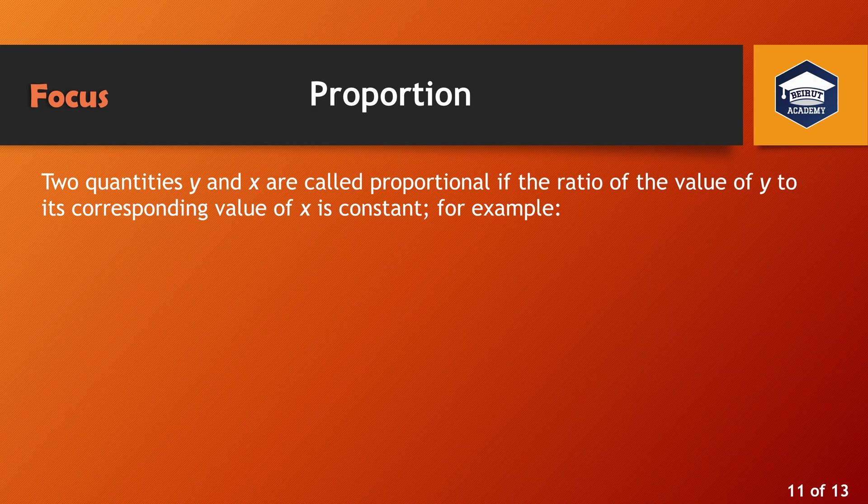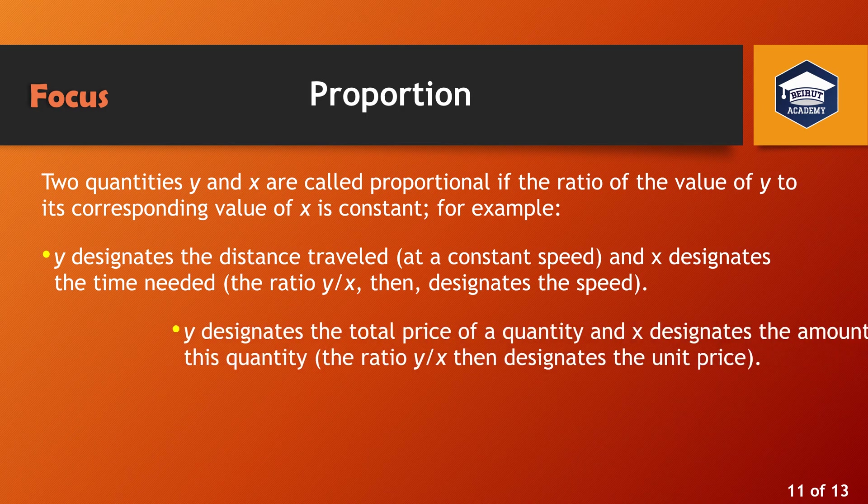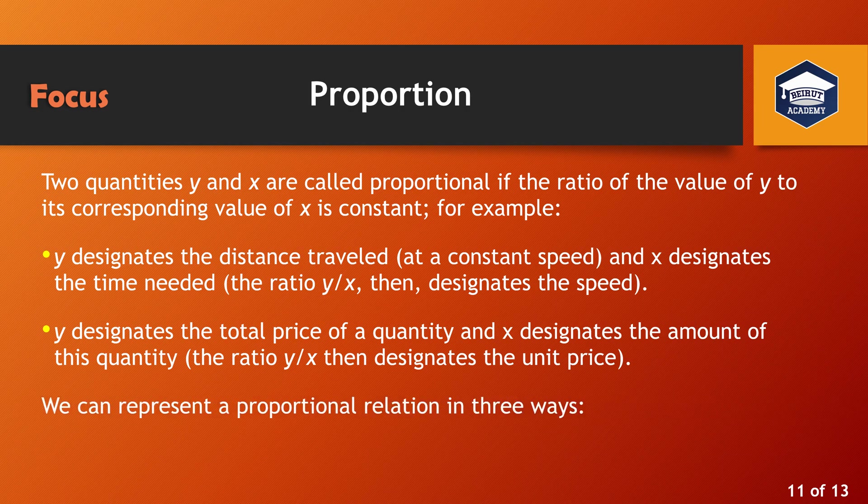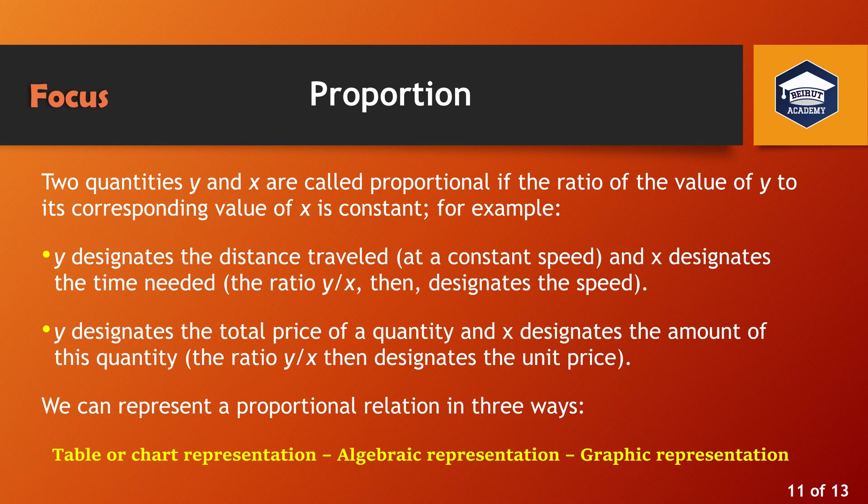Two quantities Y and X are called proportional if the ratio of the value of Y to its corresponding value of X is constant. For example, Y designates the distance traveled at a constant speed and X designates the time needed. The ratio Y over X then designates the speed. Y designates the total price of a quantity and X designates the amount of this quantity. The ratio Y over X then designates the unit price. We can represent a proportional relation in three ways: table or chart representation, algebraic representation, and graphic representation.